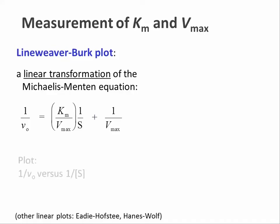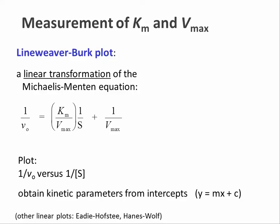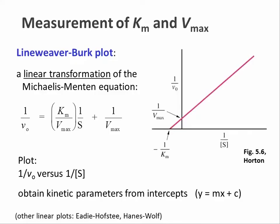This means that we can plot the reciprocal values of the initial rates, 1 over V0, against the reciprocal substrate concentrations, 1 over S. If you study the equation above, you can see that the term Km over Vmax is the slope, M, of this curve, and 1 over Vmax is the y-axis intercept of the graph.